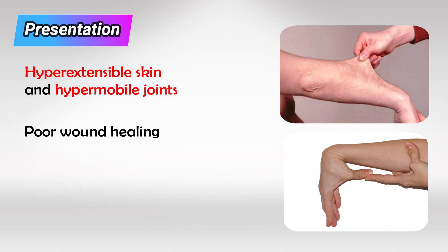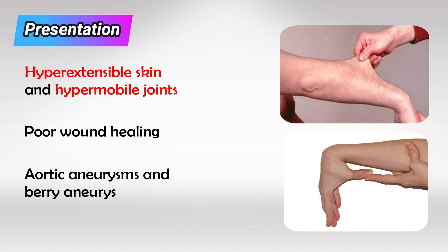Collagen is also heavily involved in the construction of blood vessels. So we see weak blood vessels that easily form aneurysms and easily rupture, especially in the aorta. Other organs can also be affected and might rupture, especially ones that would have increased pressure, like the uterus during pregnancy. We'll also see aneurysms in the brain in the form of berry aneurysms.